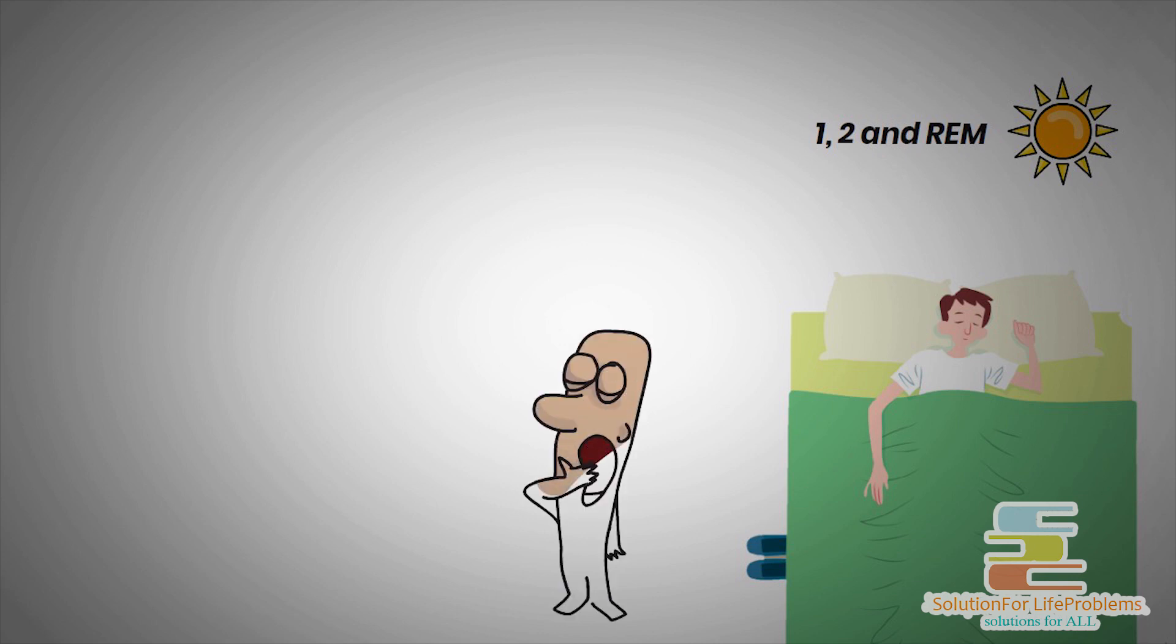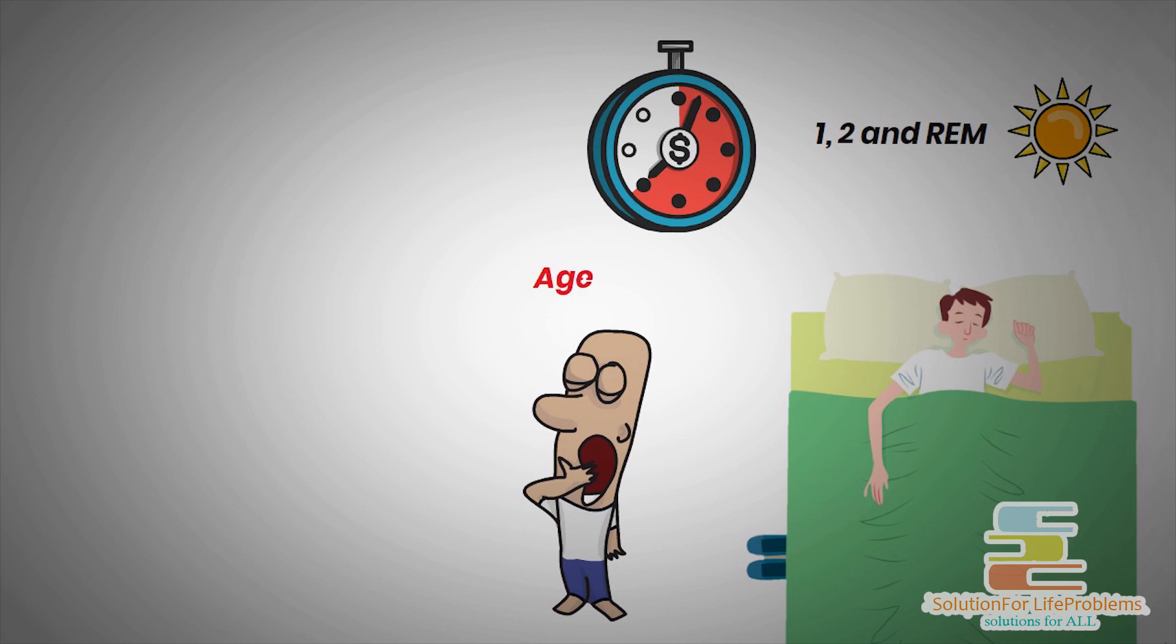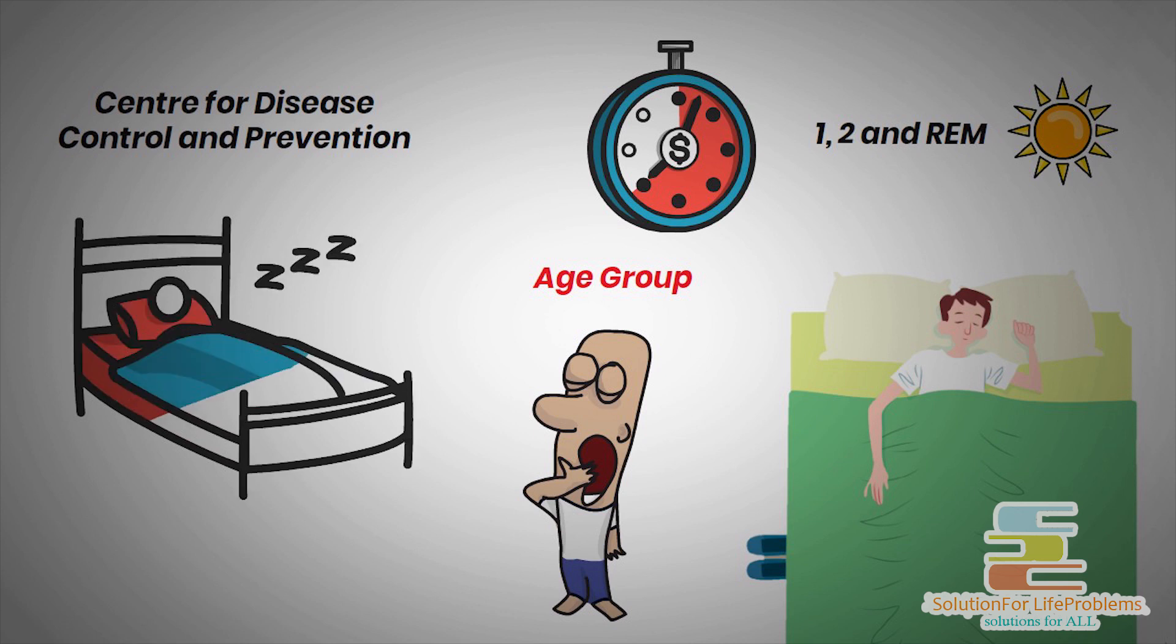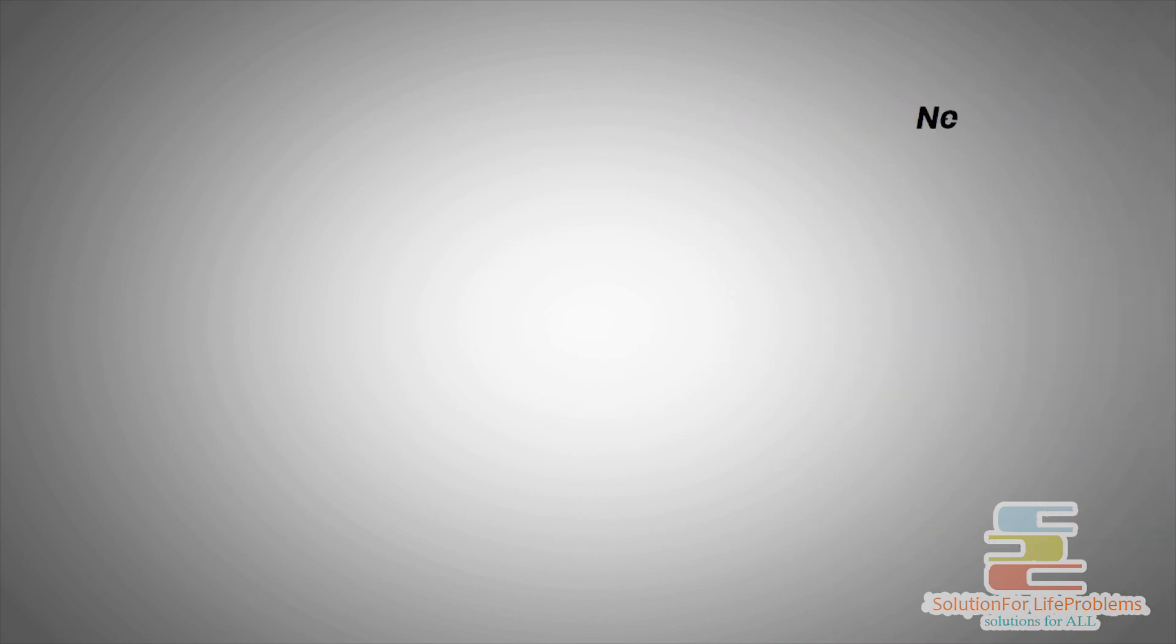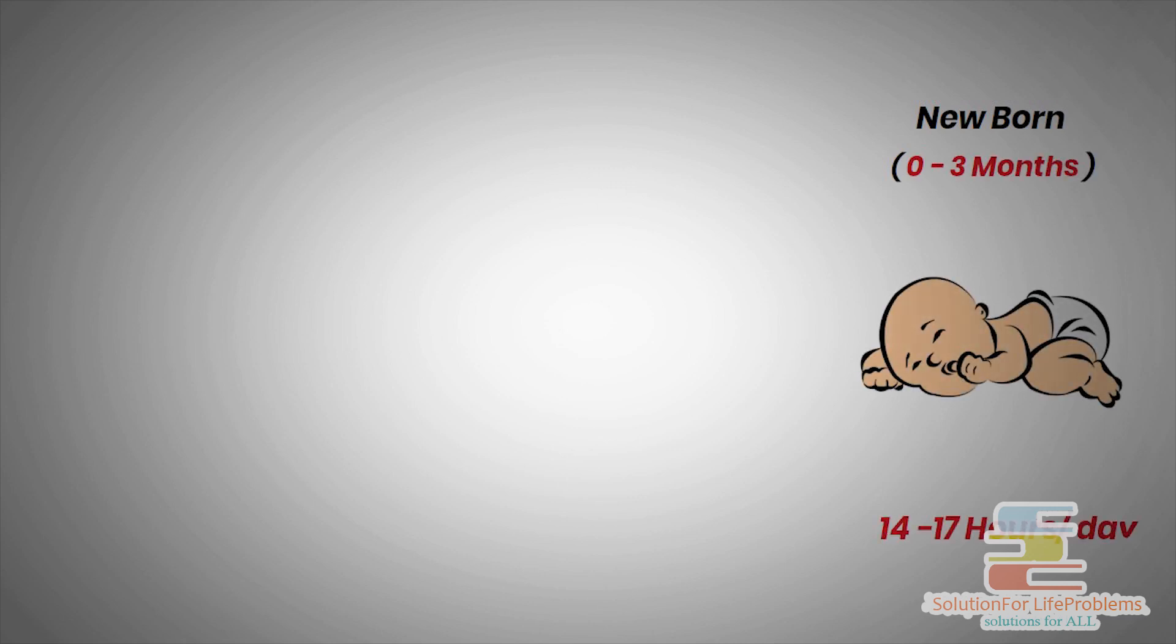Every person has different requirements of sleep but the number of sleeping hours usually depends on the age group you belong to. According to the Center for Disease Control and Prevention, sleep you need per 24 hours is: For newborns, 0 to 3 months, 14 to 17 hours of sleep in a day.